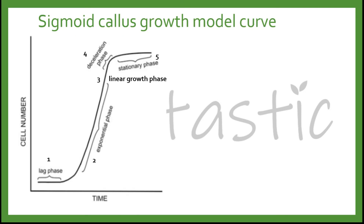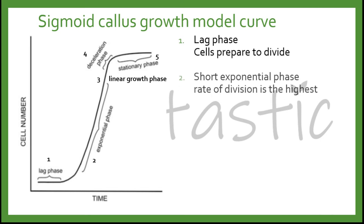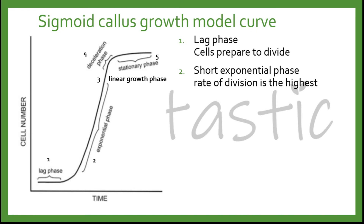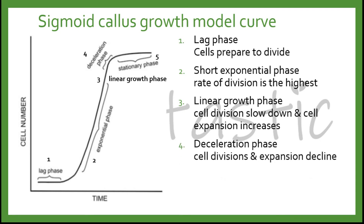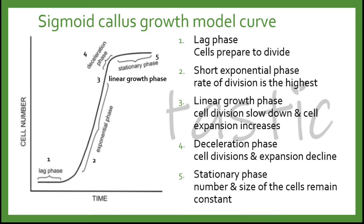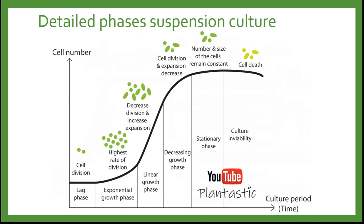In the first lag phase, the cells are prepared to divide. Followed by the short exponential phase, in which the rate of division is the highest. In the linear growth phase, cell division starts to slow down and cell expansion increases. The fourth phase is the deceleration phase, whereby both cell division and expansion are declined. Lastly, it ends with the stationary phase, in which the number and size of the cells remain constant. This shows the detailed phases of the suspension culture.